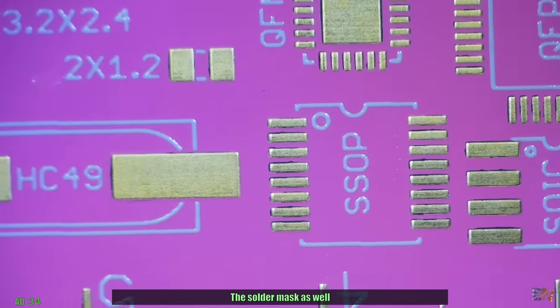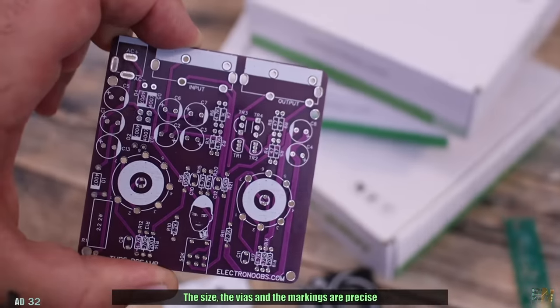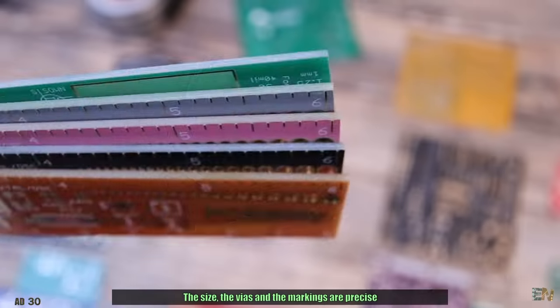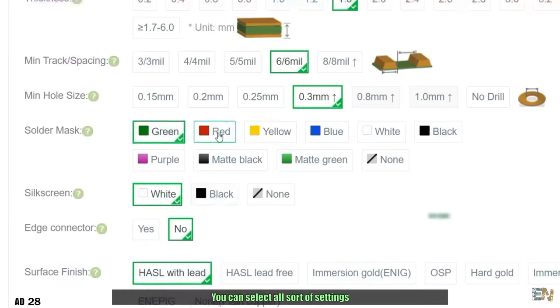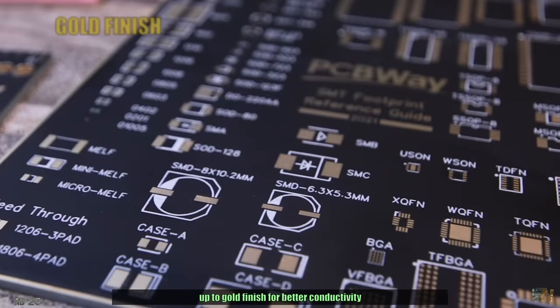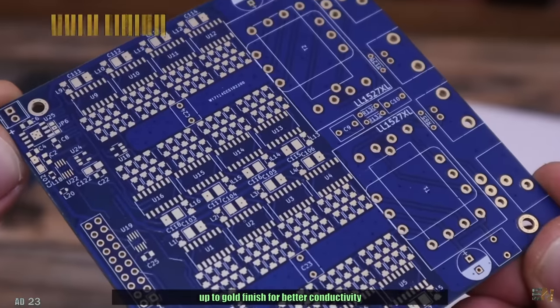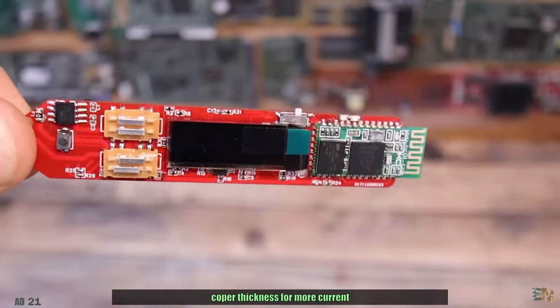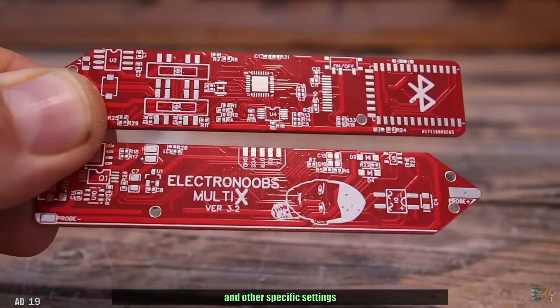The solder mask as well, the size, the vias and the markings are precise. You can select all sorts of settings, starting from the thickness and the color up to the gold finish for better conductivity, the copper thickness for more current and other specific settings.